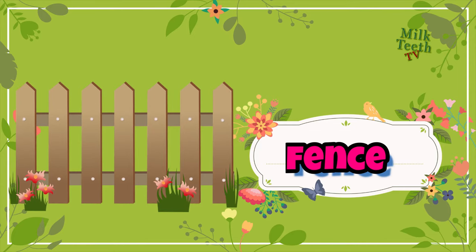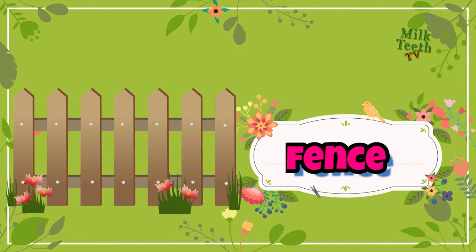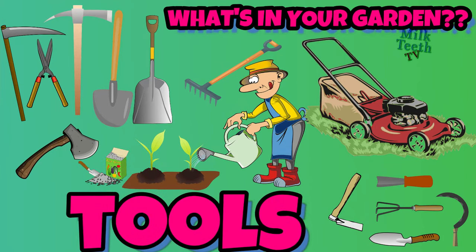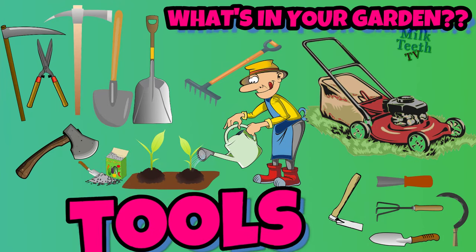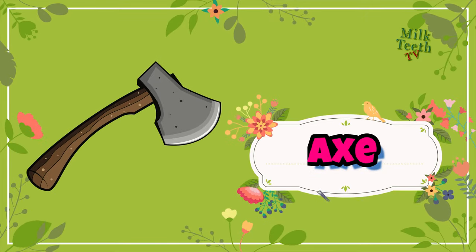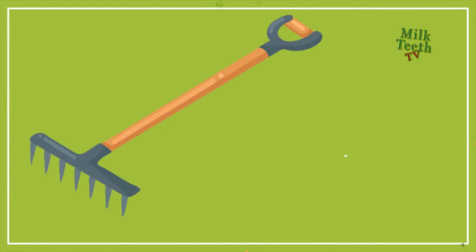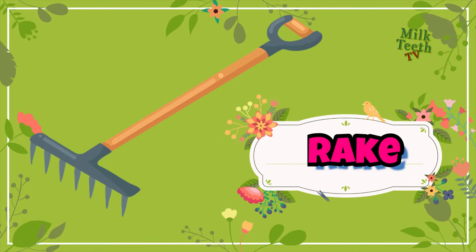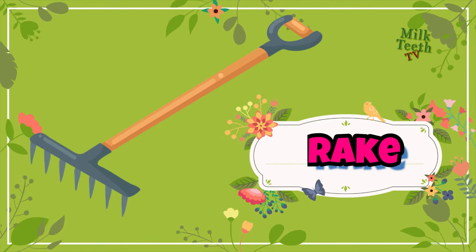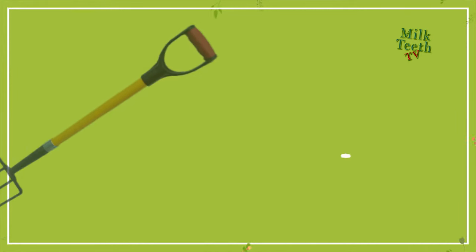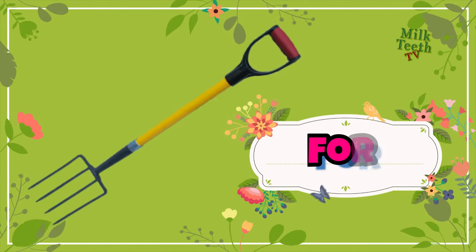Gardening tools. This is an axe, used to cut wood. This is a rake, used to collect the leaves and also level up the soil. This is a garden fork,